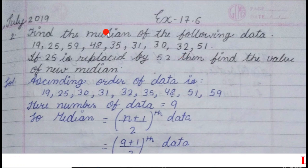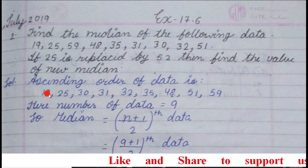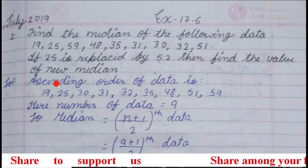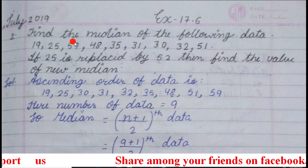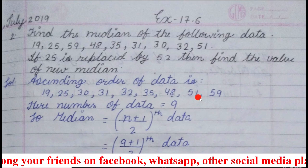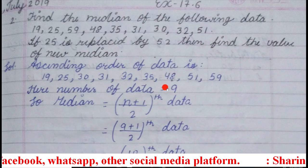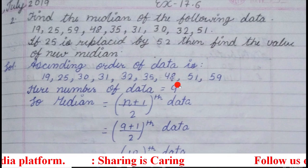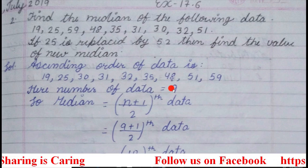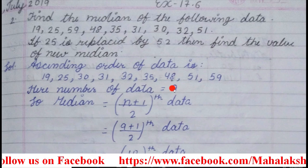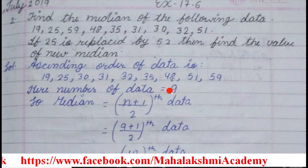To solve for the median when only data are available, the method is: first you have to write down the data in ascending or descending order. Ascending order means smaller to bigger. Here, these data you have to arrange in ascending order. After that, you have to count the data. After counting, check if the number of data is odd or even — there is a separate formula for each. Here the number of data is 9, which is an odd number.